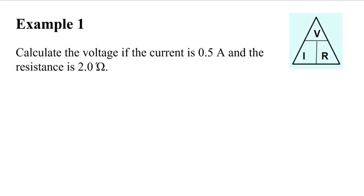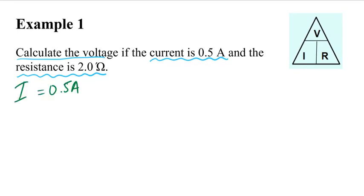Let's do the first example. We have to calculate the voltage, and the current and resistance are already given in the question. Step number one is we write down what's given to us. Step number two is to write down what we need to calculate — what do we need to solve for — which is voltage in this case.